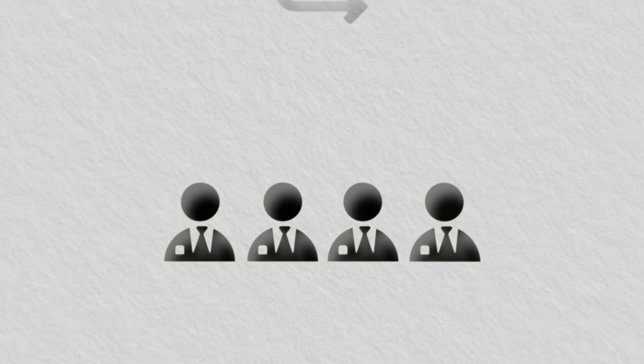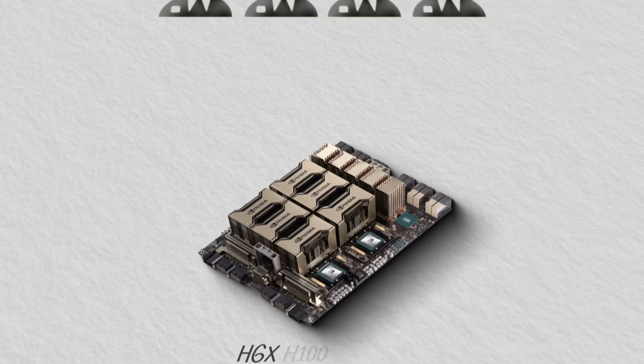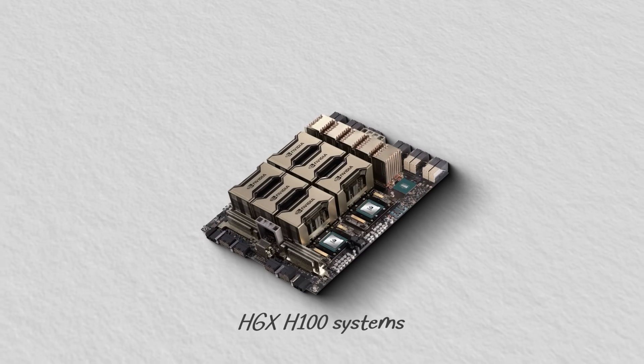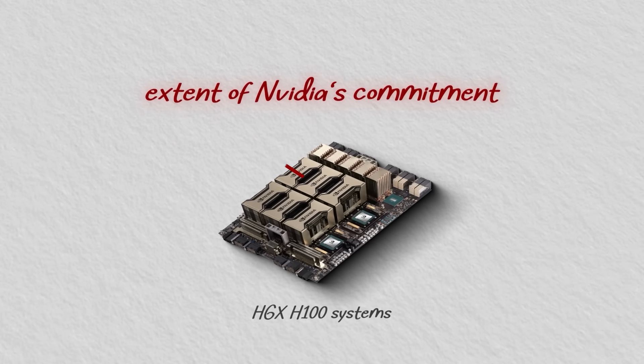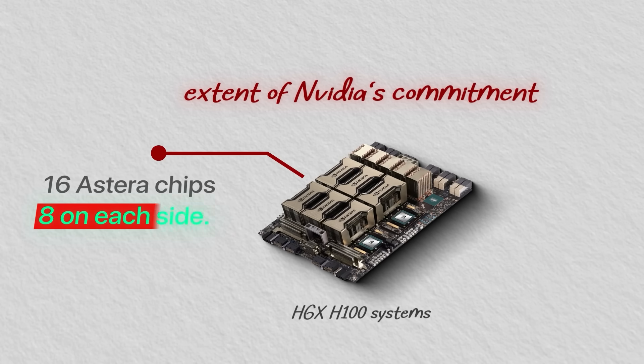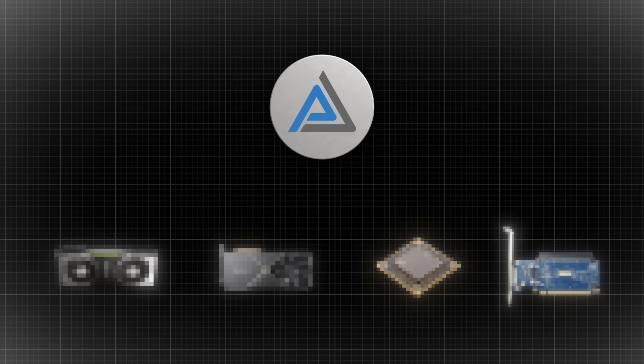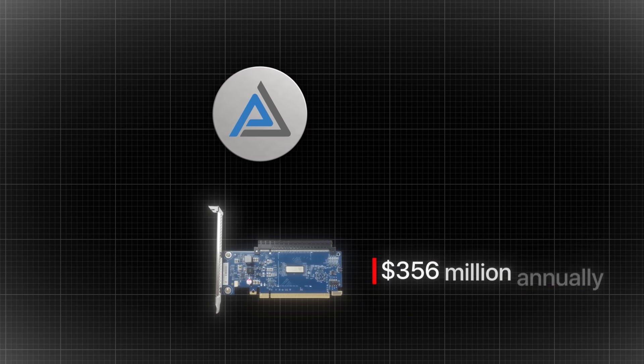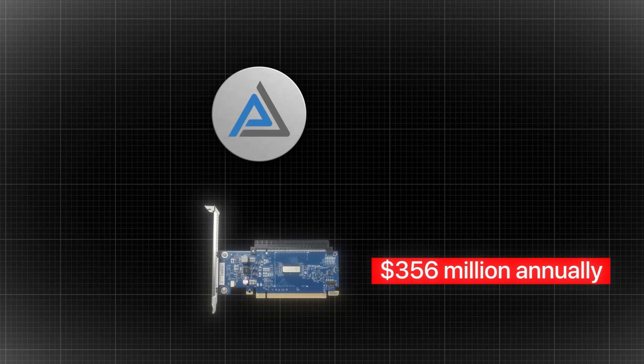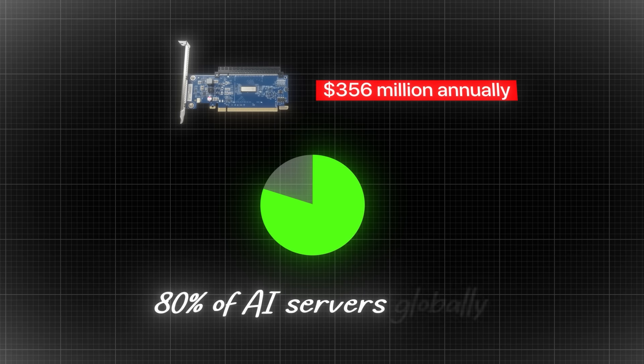And when experts trying to reverse-engineer NVIDIA's products opened NVIDIA's HGX-H100 systems, they discovered the extent of NVIDIA's commitment. 16 Astera chips per board, 8 on each side. Today, Astera's four products dominate AI connectivity. Ares retimers generate $356 million annually, appearing in 80% of AI servers globally.